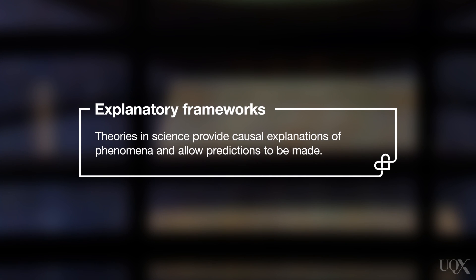Explanatory frameworks. Science famously provides explanatory causal frameworks that bind together observations and correlations. These frameworks are called theories and are models of the universe or parts of it that attempt to show why particular outcomes occur. They also allow scientists to make predictions based on their theories, which means they can then be modified to suit new evidence.